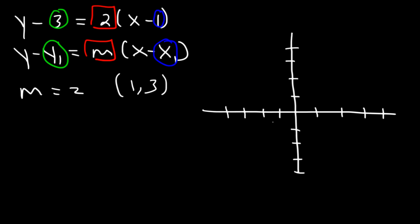So what you want to do is plot the point first. 1, 3 is over here. And the slope is equal to 2. That means as you travel 1 unit to the right, you need to go up 2 units. So the next point is going to be at 2, 5.